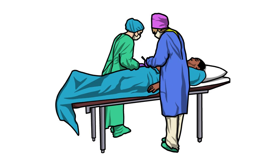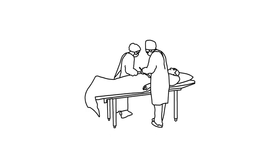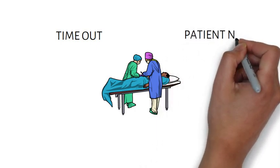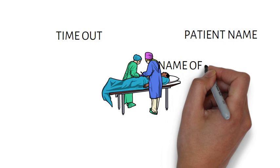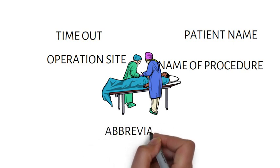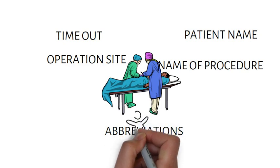Procedural constraint means that protocols must be followed and checklists must be ticked off. For example, before starting an operation, you have a time-out when the surgeon calls out to the entire team the patient's name and identification number, the procedure's name, and if a specific site — right or left — has to be operated on. This ensures that the right procedure is being done for the right patient. Cultural constraint means creating a culture of practice in an institution, for example, to stop using any abbreviations except those that are allowed.